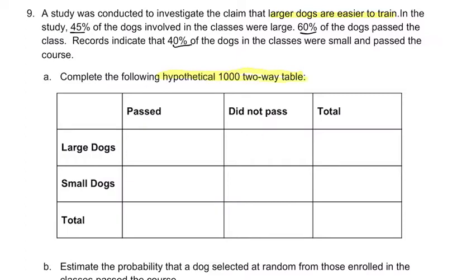A hypothetical 1,000 two-way table just means that we imagine there are 1,000 dogs in the study. That total goes here. Now we can use our percentages to figure things out.